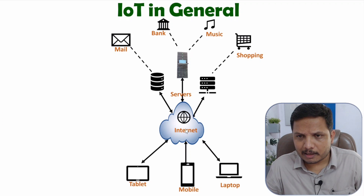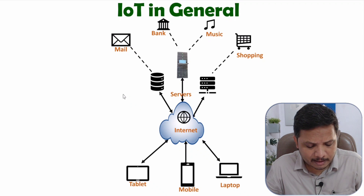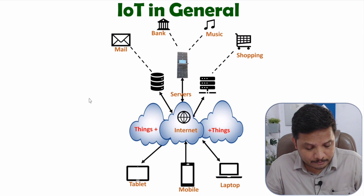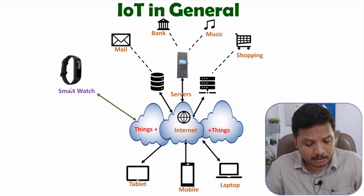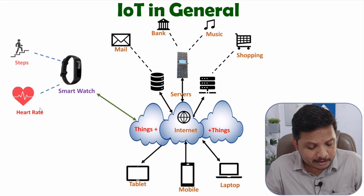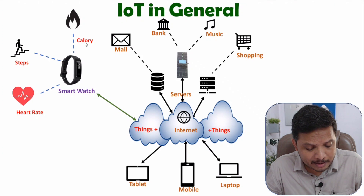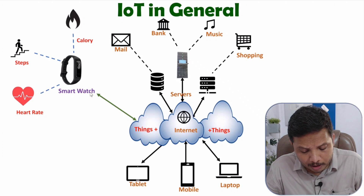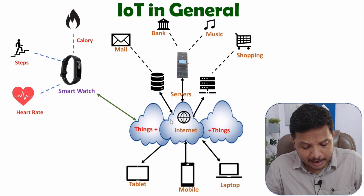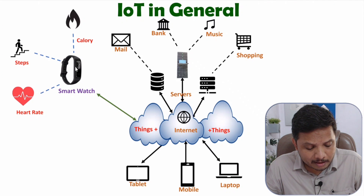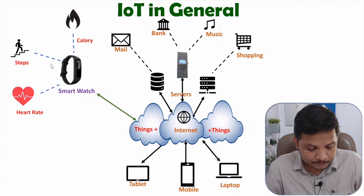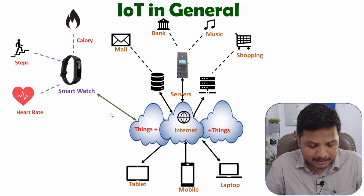Let me give you some examples. First example is a smartwatch. In a smartwatch you'll observe different data like heart rate, how many steps are there per day, how much calorie is burned per day. All those data in real time can be uploaded on internet and the user can understand what the actual data is, so they can optimize their performance in daily life.